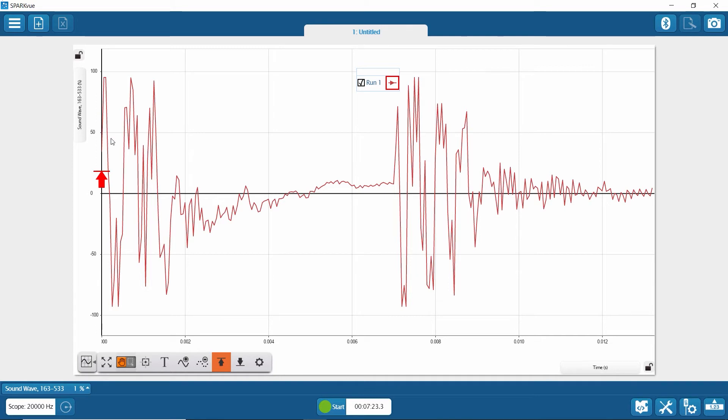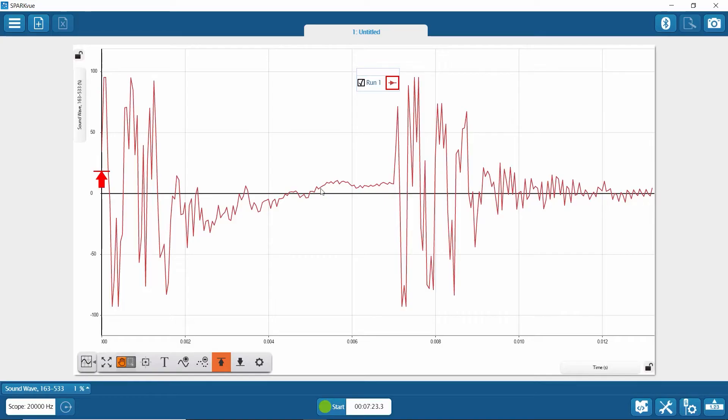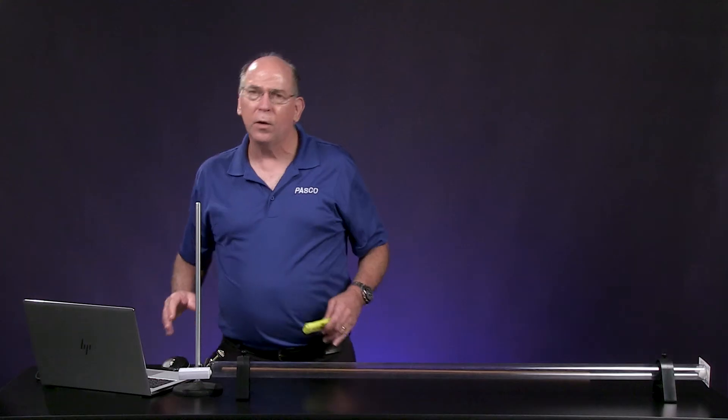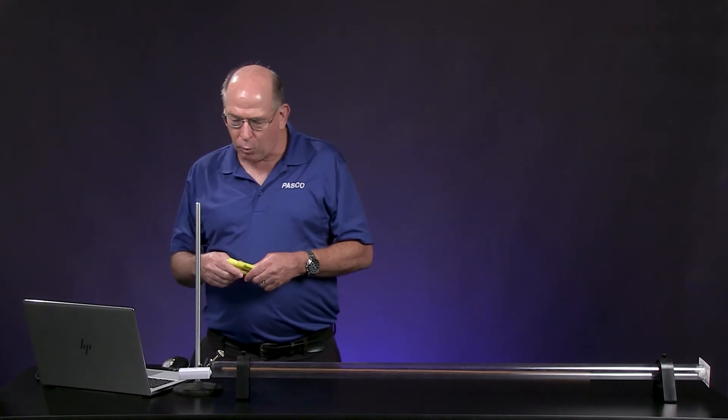You can see the first sound hit here at zero and it oscillates for a little bit. You're getting reflections off the side of the tube, but then it should die down and then boom, here's the returning echo. So the time from zero to here is the time it took the sound signal to travel. And that is now run one.